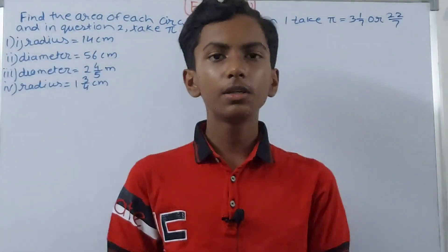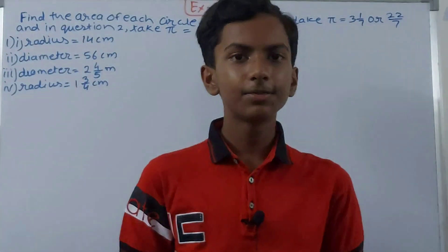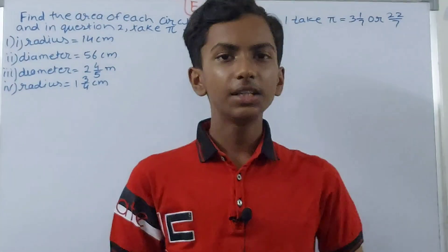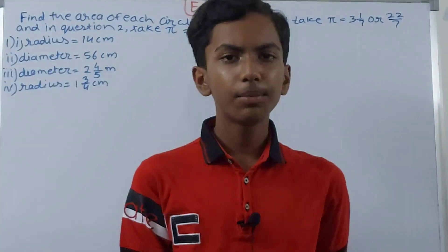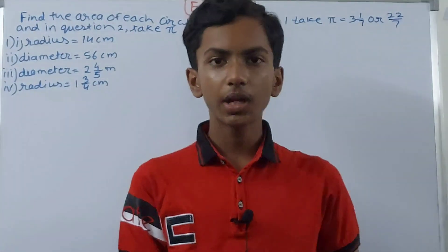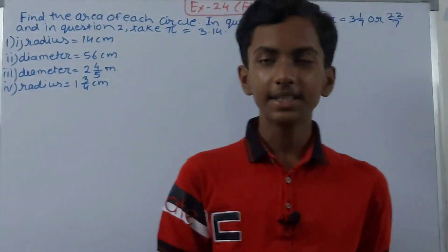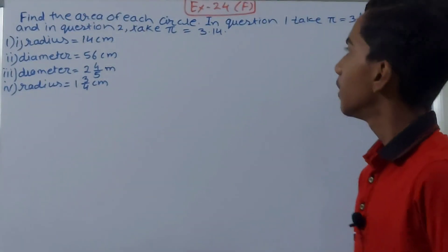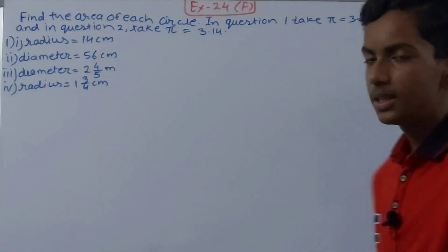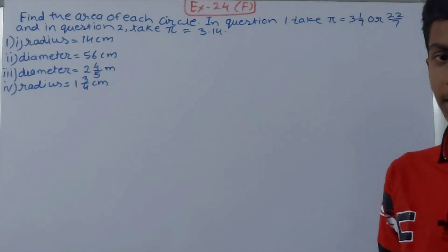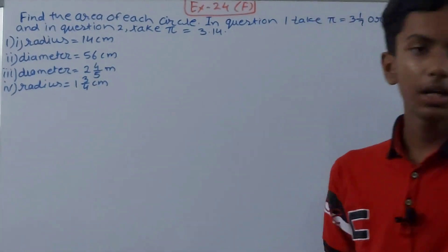Hello friends, welcome back to my YouTube channel Lock Your Learning. In this video we are going to solve ICOC Mathematics Class 7, Chapter 24, Area and Perimeter, Exercise 24F, Question Number 1. This is find the area of each circle. In Question 1, take π = 3 whole 1/7 or 22/7, and in Question 2, take π = 3.14.